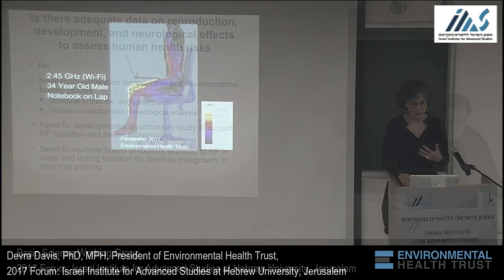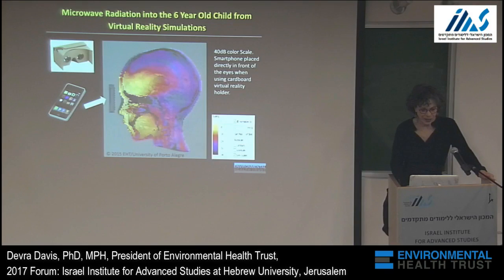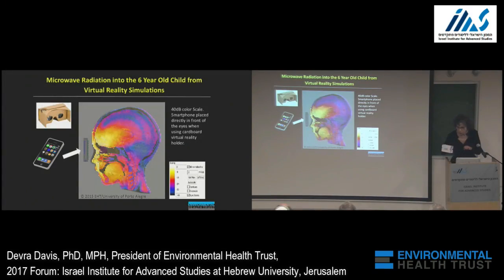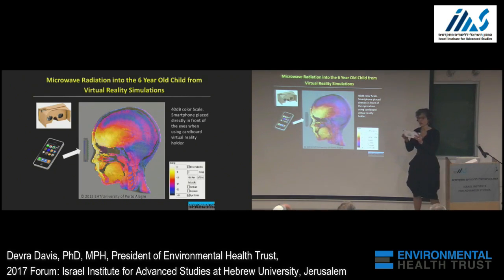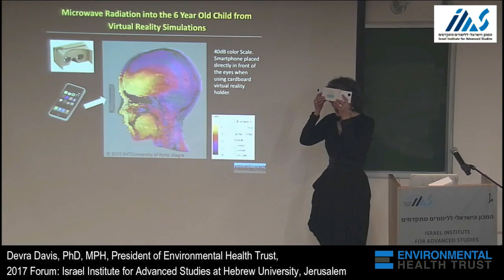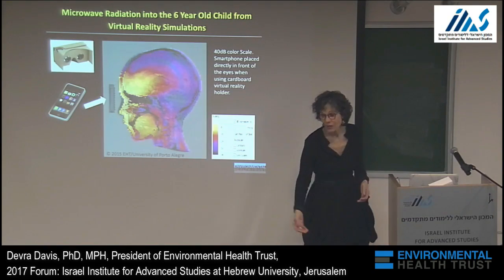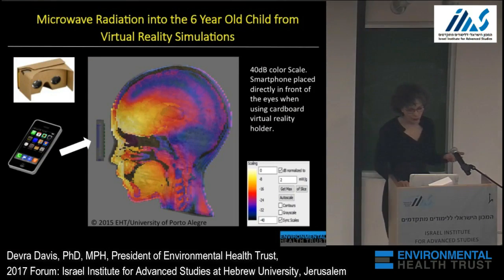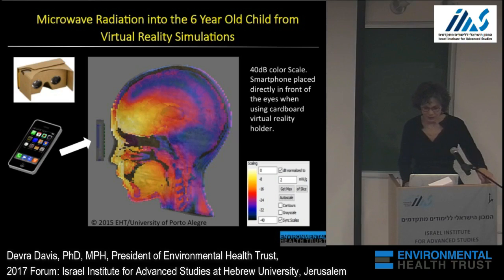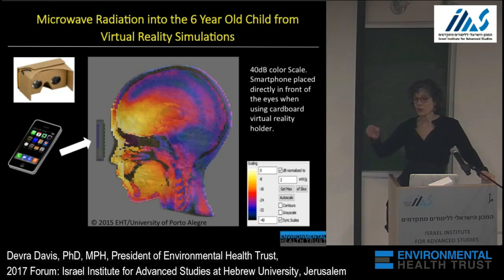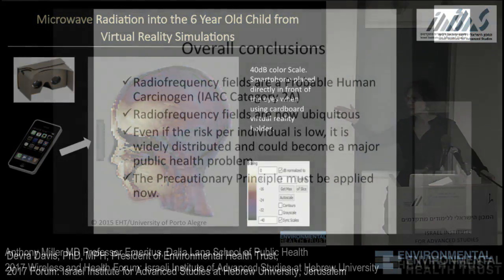The second exposure I will show you is from virtual reality. Here is a VR device being marketed to eight-year-olds — they can hold it right here, take a trip to the moon. It holds a smartphone that is emitting and receiving wireless radiation, and these devices have never been tested for exposure or for any safety limits at all — directed at the young brain with its thinner skull which contains more fluid.